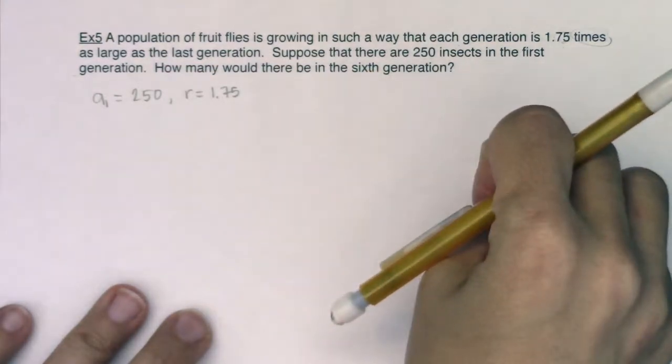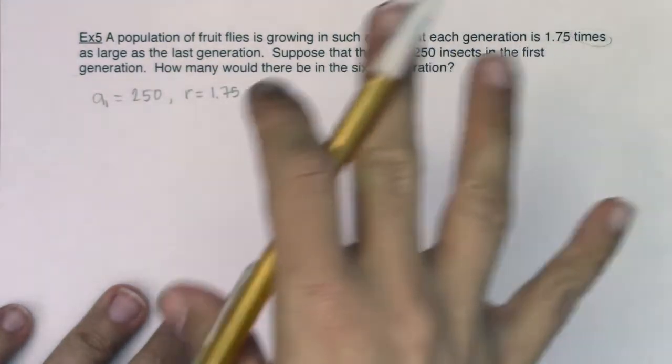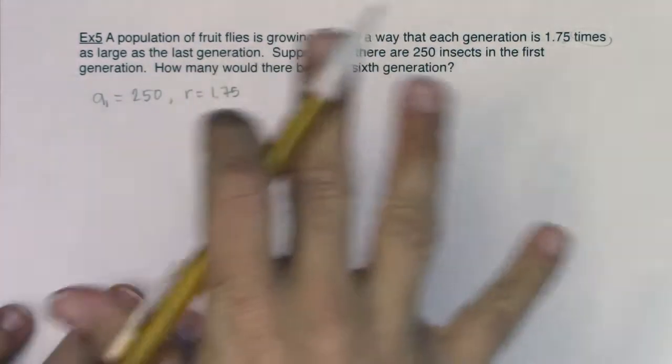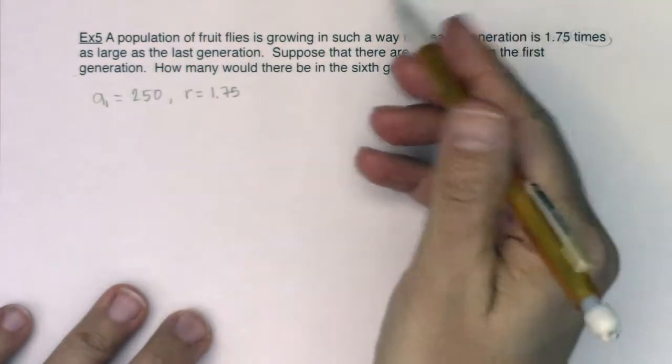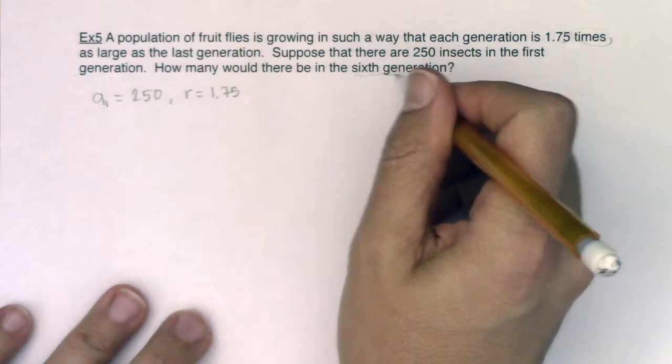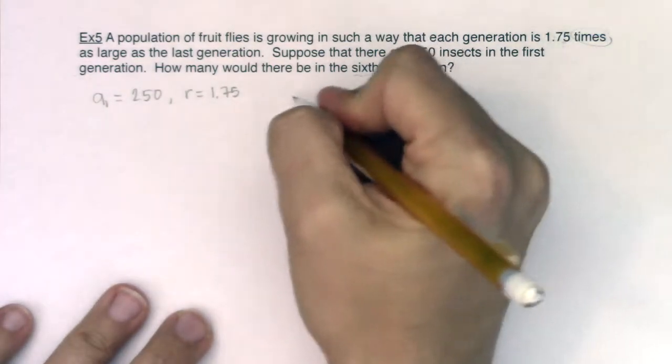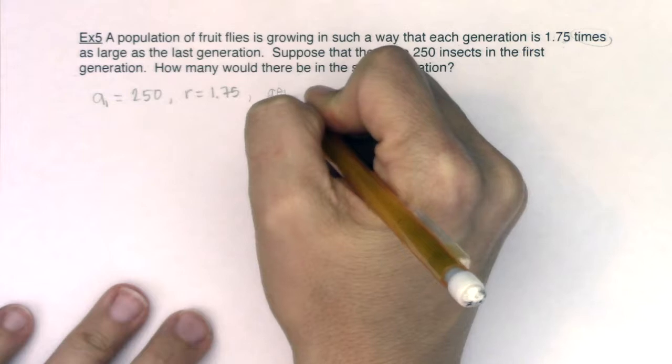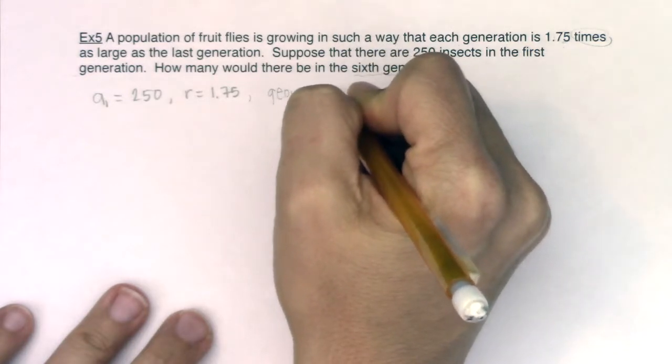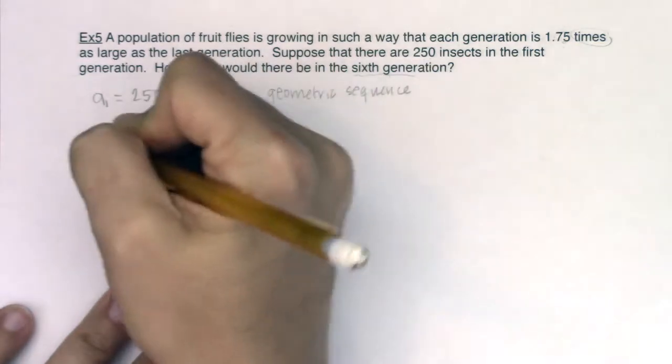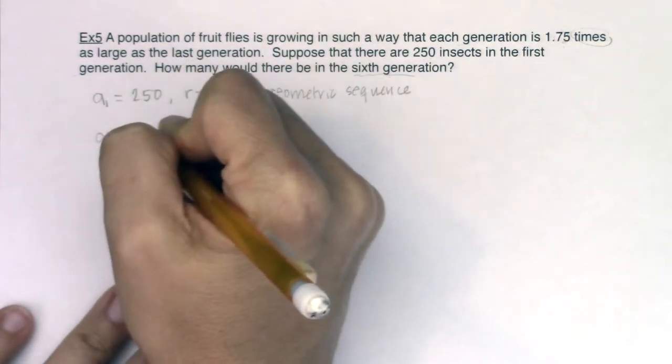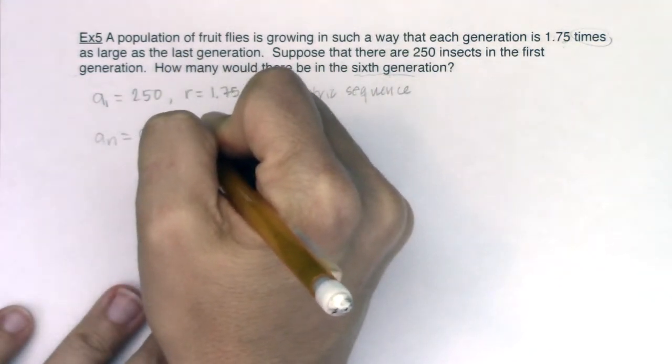So geometric sequences are completely related to exponential growth in the same way that arithmetic sequences are completely related to linear growth. But with this, they're asking you for a sub 6. Now, because this is a geometric sequence, we are looking at the formula a sub n equaling a sub 1 times r to the n minus 1.